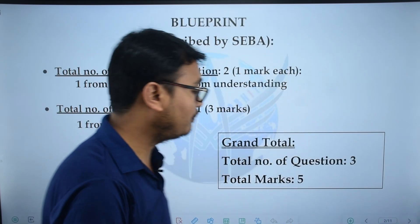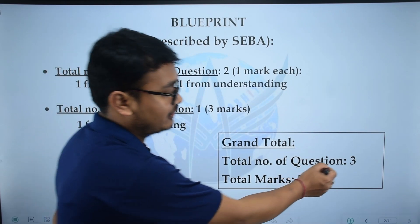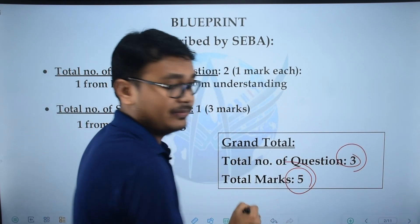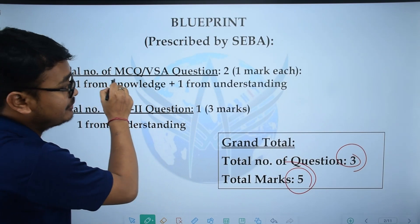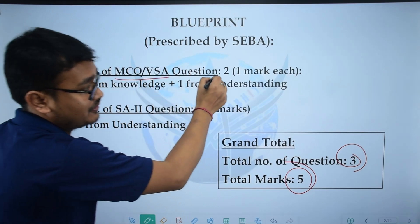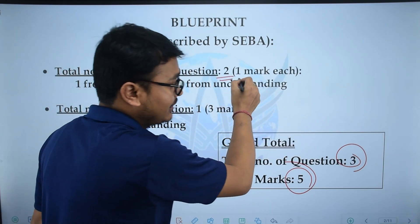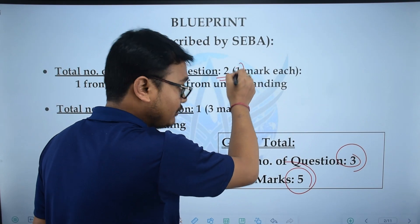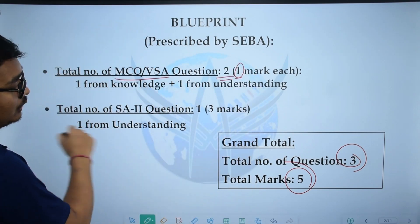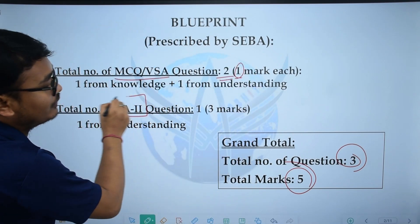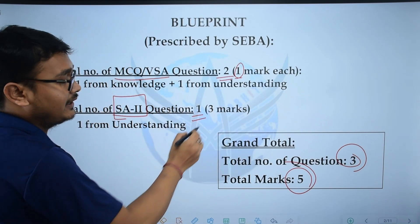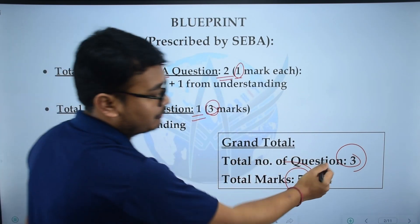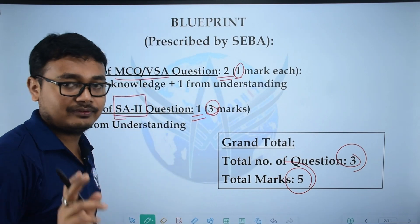I will tell you the marks distribution pattern. The total number of questions is 3 and the total marks is 5. The MCQ or very short answer type questions are 2, each carrying 1 mark. The total number of short answer type 2 questions is 1, carrying 3 marks. So the total number of questions is 3 and total marks is 5.